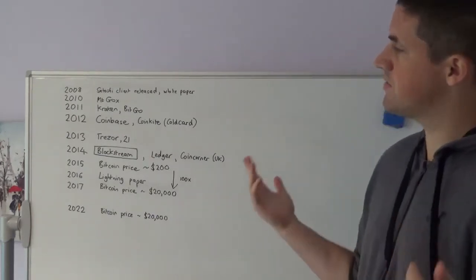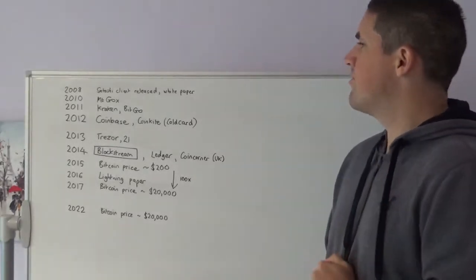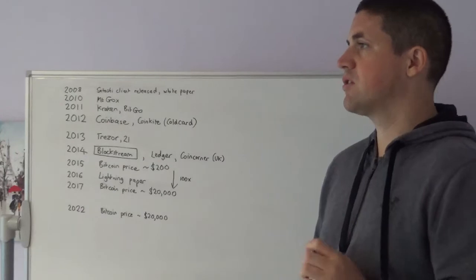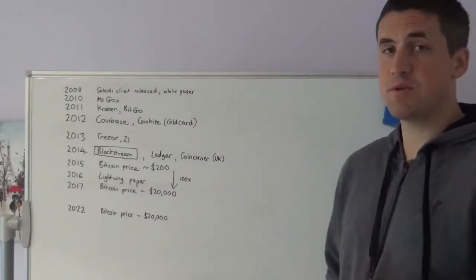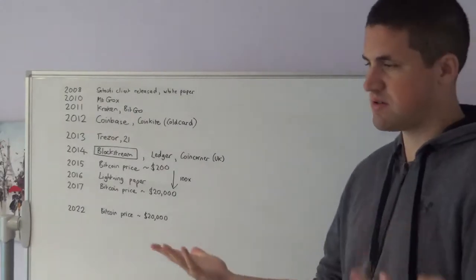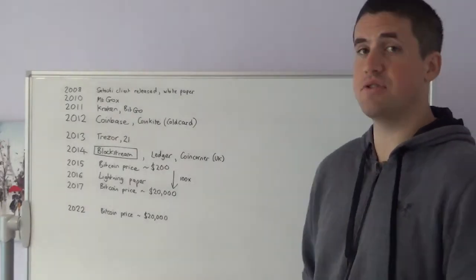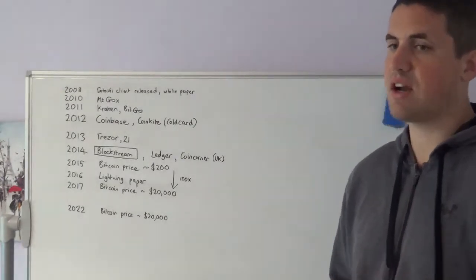A brief timeline: 2008 is when Satoshi released the first client and the white paper. The first exchange that got real traction was Mt. Gox in 2010. An exchange is a website or service that allows you to swap your fiat currencies for Bitcoin.